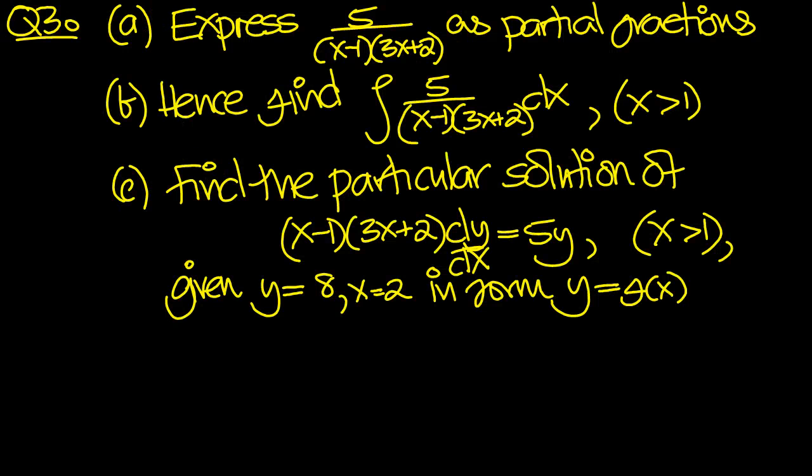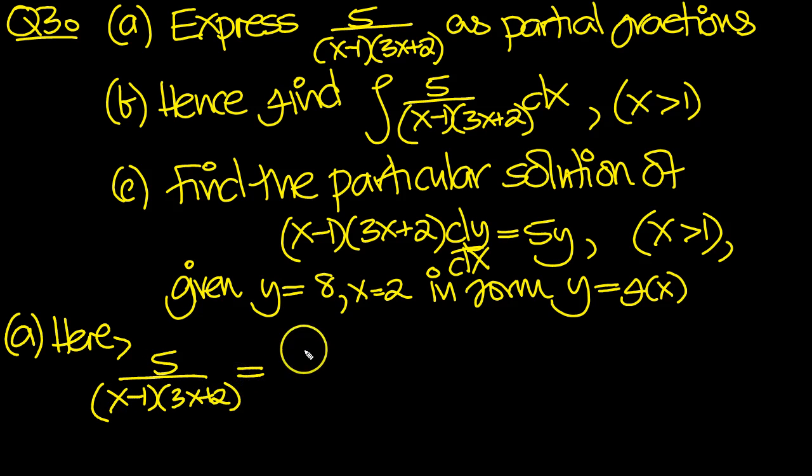So I've summarized the question here. Let's have a little look at it then. So the first part is partial fractions. So let's have a go with the partial fractions then. So we simply write 5 over x minus 1, 3x plus 2 is equal to the linear factors. So we write A over x minus 1 plus B, because it's a linear factor case, over the 3x plus 2.